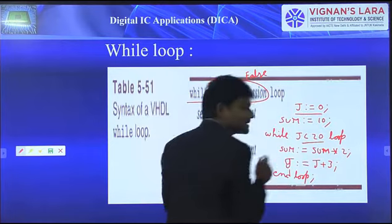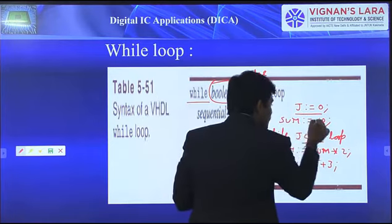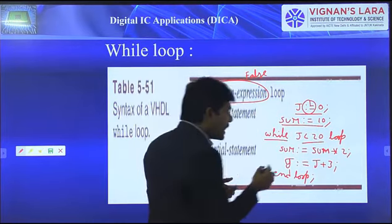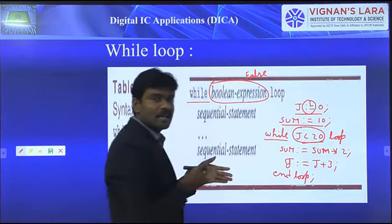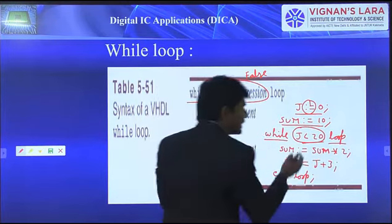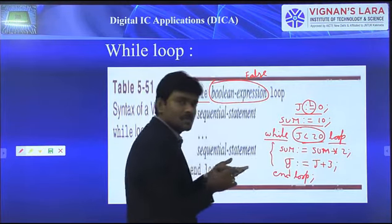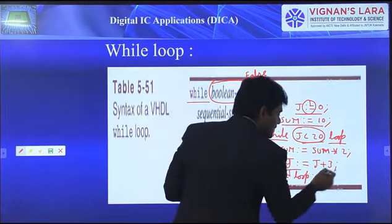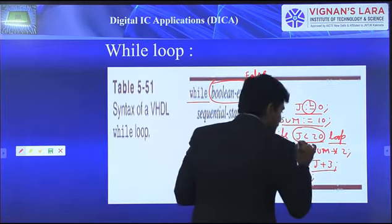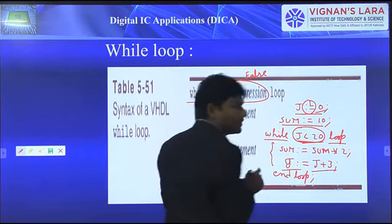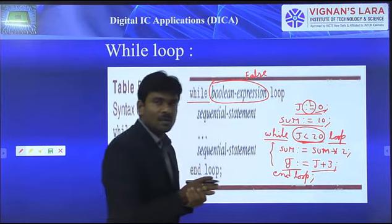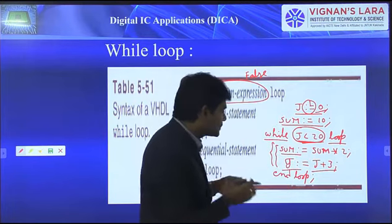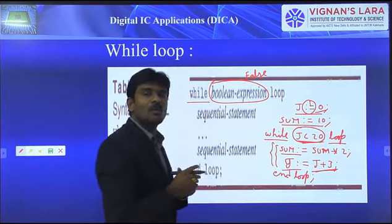To summarize the program: j is assigned 0, sum is assigned 10. The while loop starts with keyword 'while', the boolean expression is j less than 20, and inside we have two statements — sum is multiplied by 2, and j is incremented by 3. Initially j is 0, so j less than 20 is true, and the two operations execute. After the first iteration, j becomes 3.